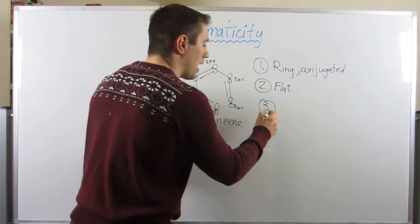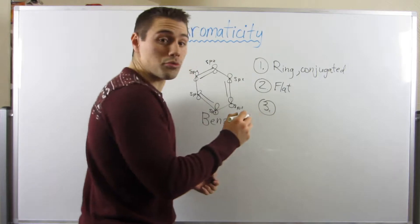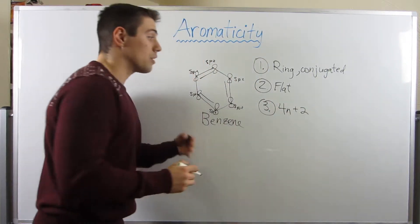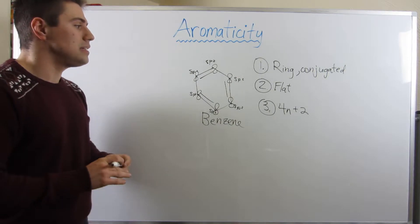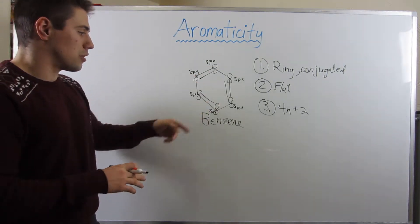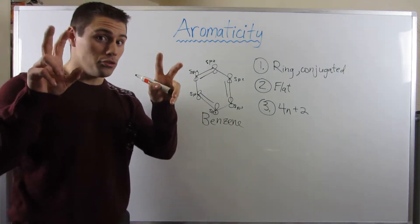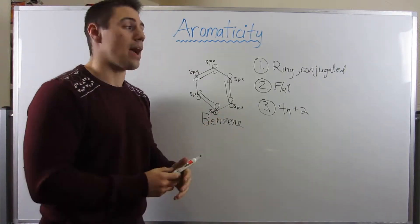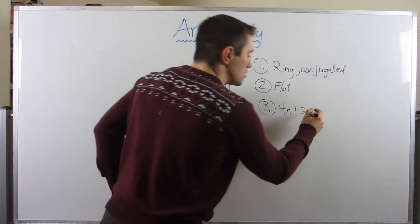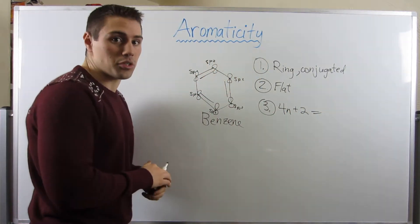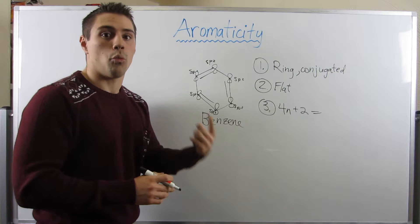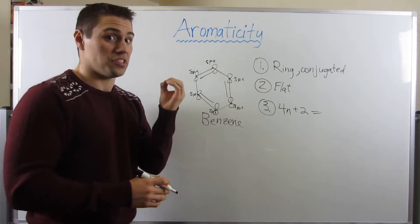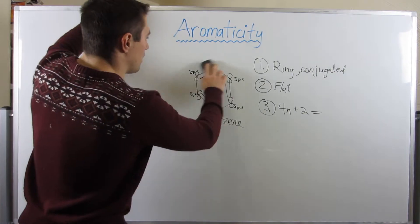And 3, you have to abide by what is called Huckel's rule. And basically, that's also referred to as the 4n plus 2 rule. So what that means is all of the electrons that you include in the system you're trying to label as aromatic, they have to satisfy this 4n plus 2 equation where n is an integer, like 1, 2, 3, whatever, or possibly even 0.